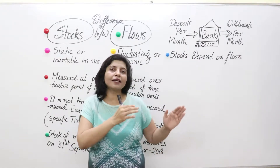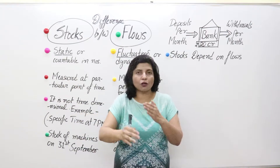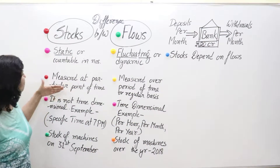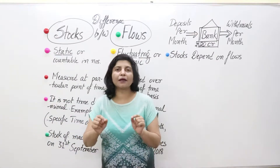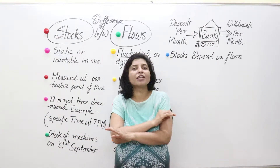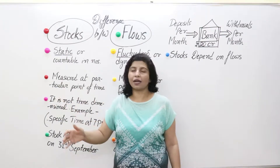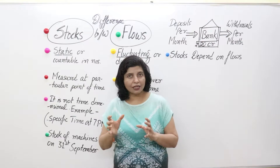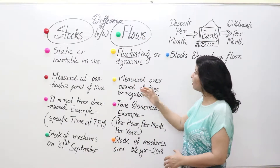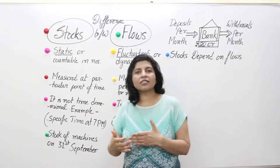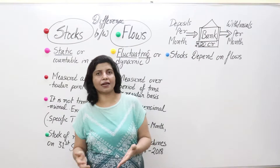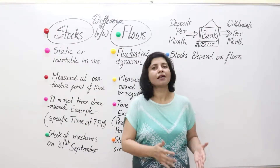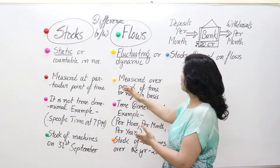Flow is a continuous process or a process over a period of time — that is, the process of selling and clearing your stocks. Stock is measured at a particular point in time, and you can calculate averages from that — per year, per month, etc. Flow is measured over a period of time on a regular basis — per month, per day, per year, etc. We are measuring the process of selling these packets of biscuits on a regular basis or over a period of time.